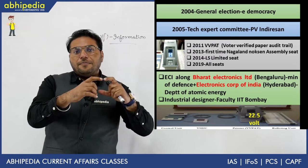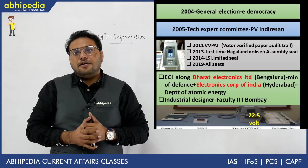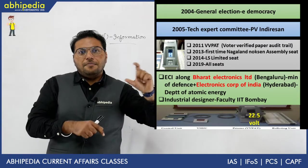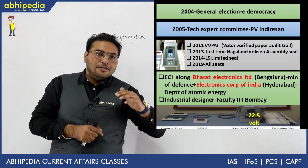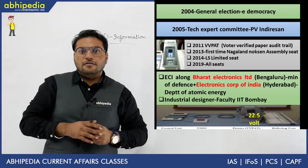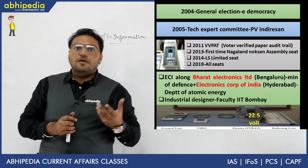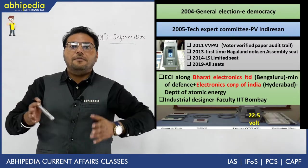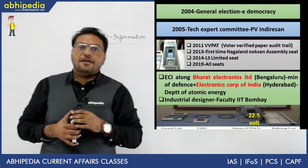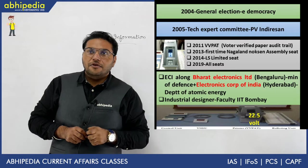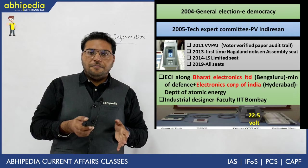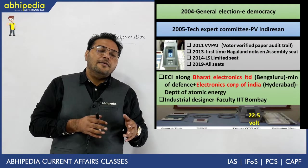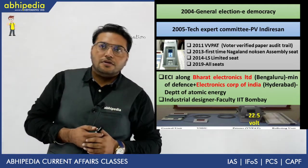To address authenticity concerns, VVPAT (Voter Verified Paper Audit Trail) was introduced. When a voter casts their vote, a paper slip comes out showing the candidate's name, party symbol, and serial number, which can be compared with the EVM count to increase transparency. In 2013, VVPAT was first used in the Noxian assembly constituency in Nagaland — important for prelims. In 2014, it was used in limited Lok Sabha seats, and in recent elections it was deployed in all seats.